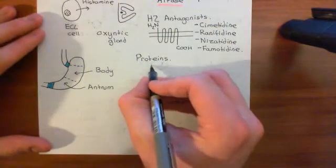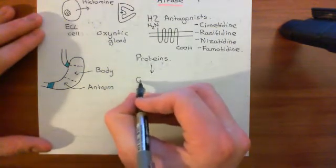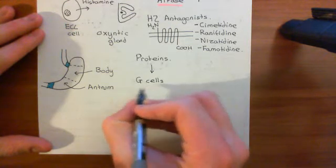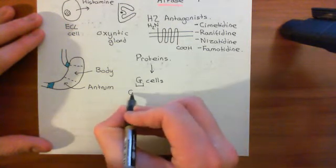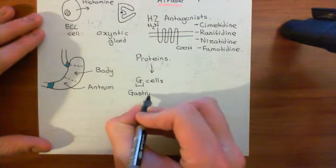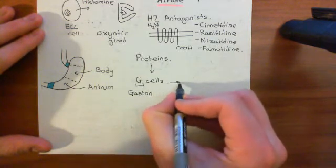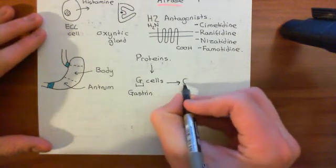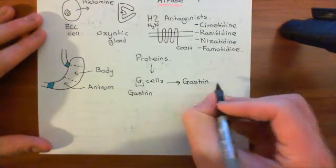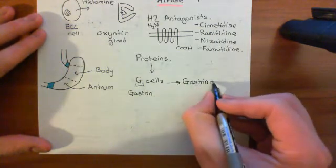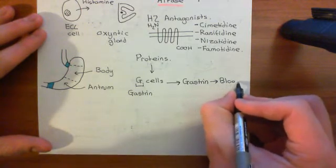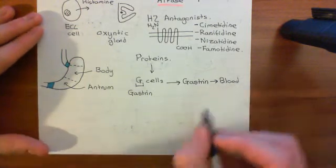What do the G cells then secrete? By the way, G cell is simply short for gastrin cell — the G is simply short for gastrin. Basically they secrete the hormone gastrin, and they'll secrete it into the blood. So these G cells will release gastrin into the blood — and which cells is it going to act on?